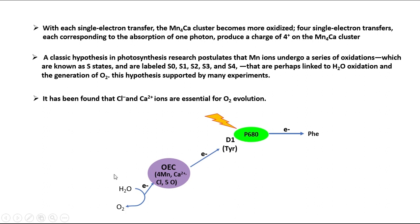Summary of water oxidation: After receiving a photon, P680 becomes excited and donates its electron to pheophytin, becoming oxidized. The tyrosine residue in subunit D1 of the photosystem II reaction center donates its electron to the reaction center P680. The tyrosine radical regains its missing electron from the oxygen-evolving complex via water oxidation. The oxygen-evolving complex contains four manganese ions, one calcium ion, one chlorine ion, and oxygen.